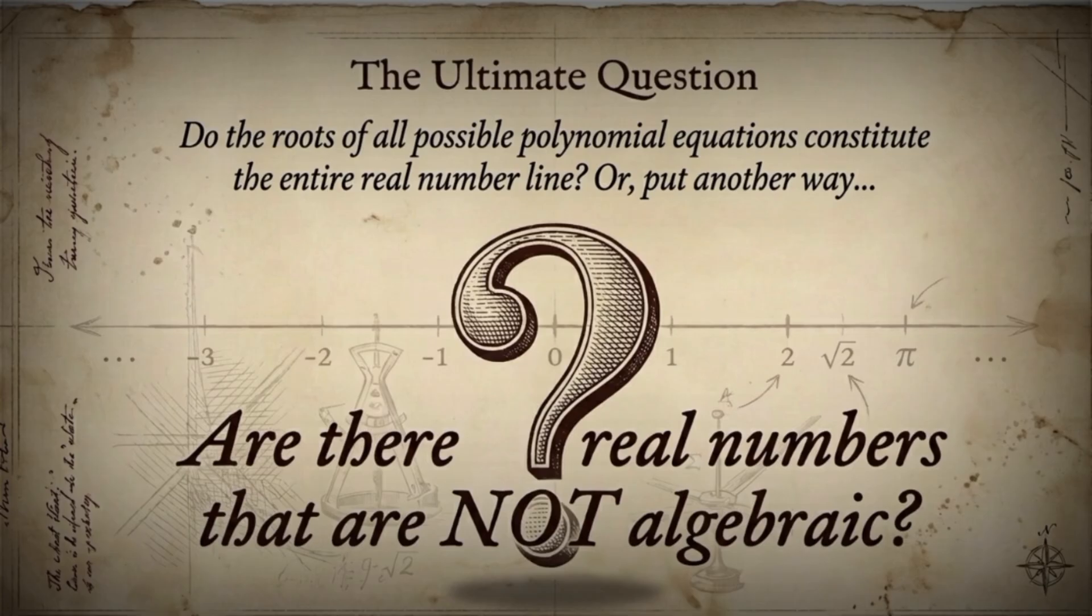Here's the profound question. Do the roots of all possible polynomial equations constitute the entire real number line? Let's give these numbers a name, algebraic numbers. These are numbers that are roots of polynomial equations with integer coefficients. The question becomes, are there real numbers that are not algebraic numbers?